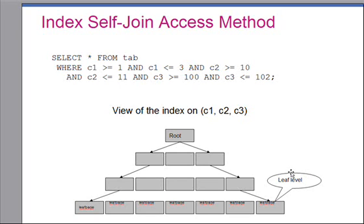Now let's talk about the index self-join access method. A common scenario many of our partners face is that they do not know the distribution of data when they create the schema and decide on the number of indices. So they create a certain number of indices based on their best approximation of the distribution. As you would expect, it is not wise to create every combination of indices available to the DBA; it's best to choose the minimum number of indices that give the best performance for queries.